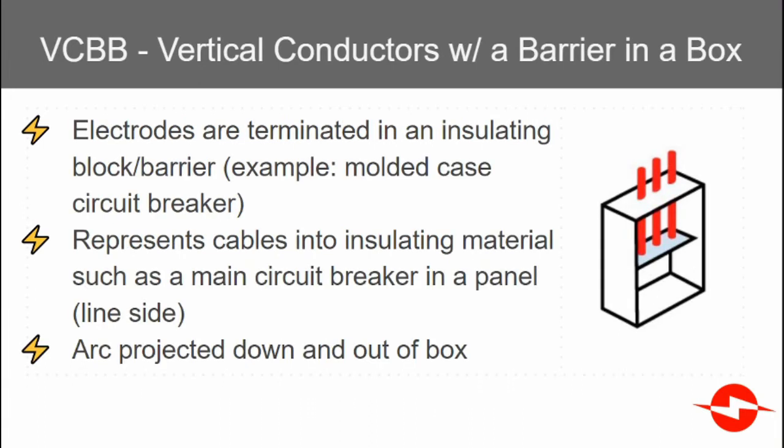The next configuration is vertical conductors with a barrier in a box. Electrodes are terminated in an insulating block or barrier — for example, a molded case circuit breaker. The arc is again projected down and out of the box, with relatively more incident energy compared with the previous configuration, due to the block or barrier reflecting more energy out of the box.